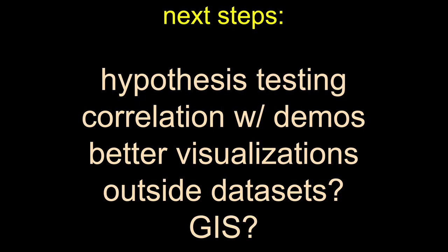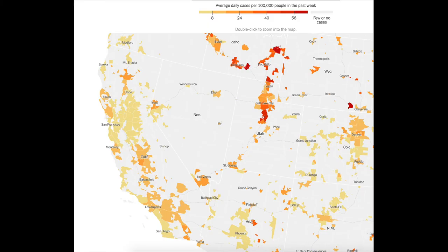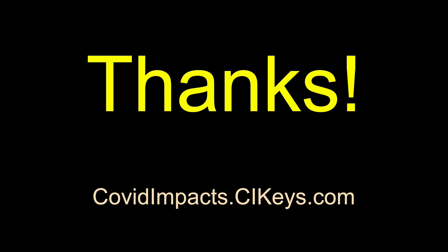My next step is to do more rigorous hypothesis testing and try to start correlating the intensity of responses with demographics. I want to work on better visualizations, possibly pulling in some outside data sets and GIS. For example, I've been seeing a lot of published results in newspapers about the geographic distribution of cases and how people are moving, and I might want to merge that with our data to see if it's an explanatory factor as well. Thanks — you can check out my website that has my ongoing blog about my research.